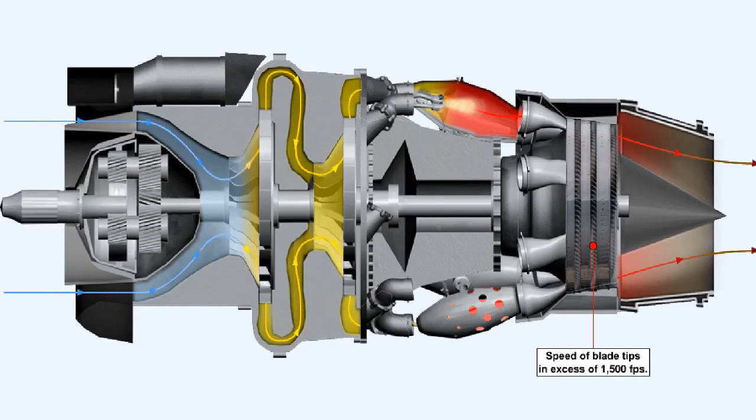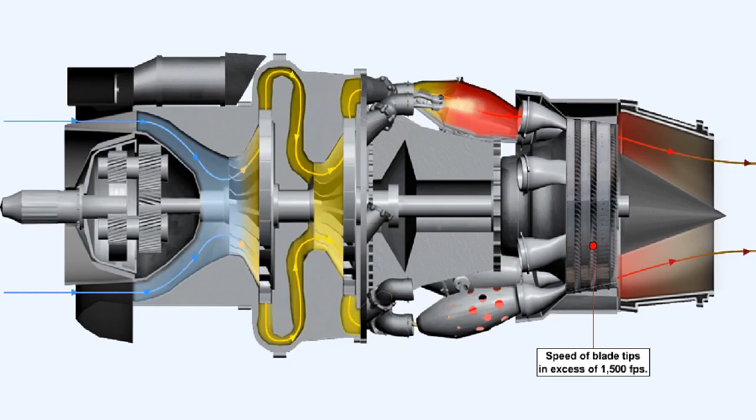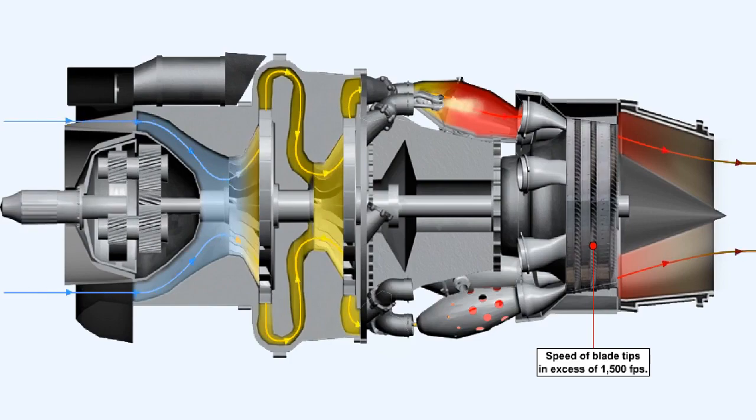During normal operation of the engine, the rotational speed of the turbine may be such that the blade tips travel at a rate in excess of 1,500 feet per second.